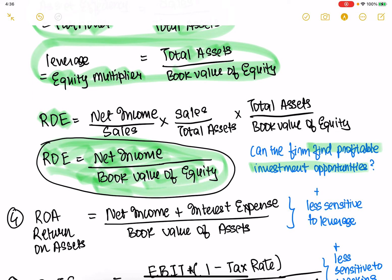Once you have return on equity, there is some sensitivity here to leverage, as you can imagine. So then you find out return on assets — net income plus interest expense divided by book value of assets gives you ROA. This measure is better than return on equity because it is less sensitive to leverage.